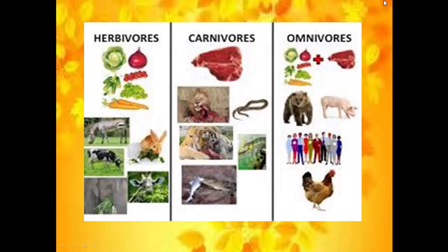Based on this, we can classify the animals into three categories: herbivores, carnivores and omnivores. Herbivores are animals that eat only plant materials, and carnivores consume flesh material. Omnivores are organisms which take in both plant material as well as flesh. Even we come under the category called omnivores.